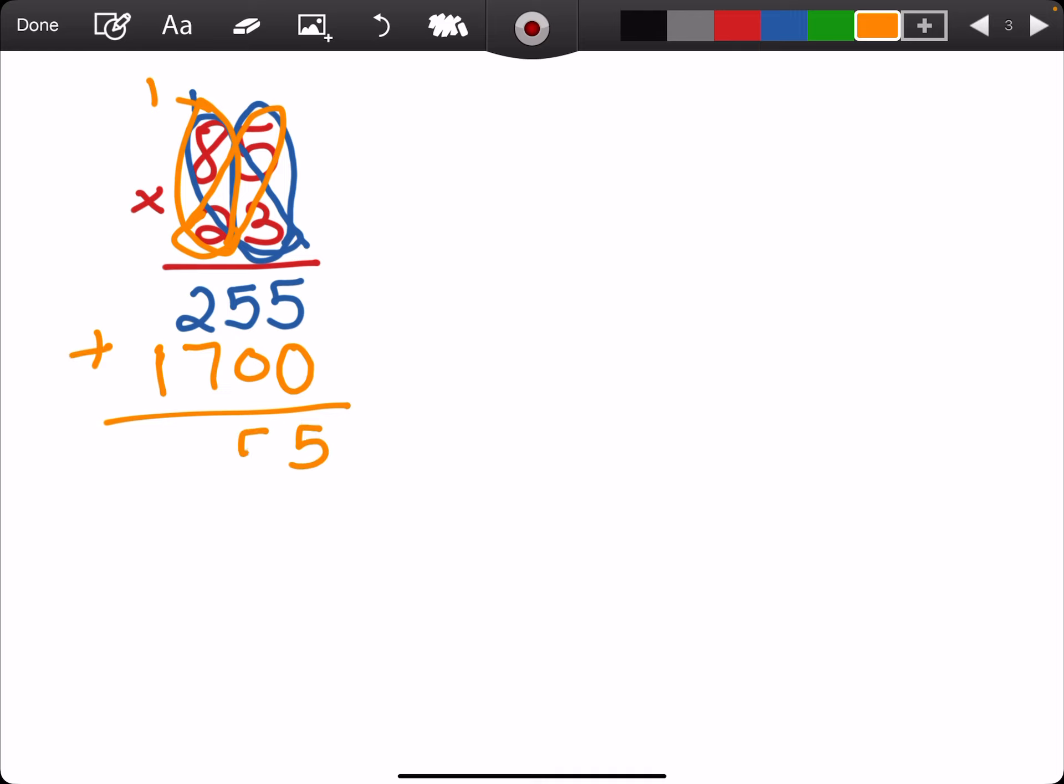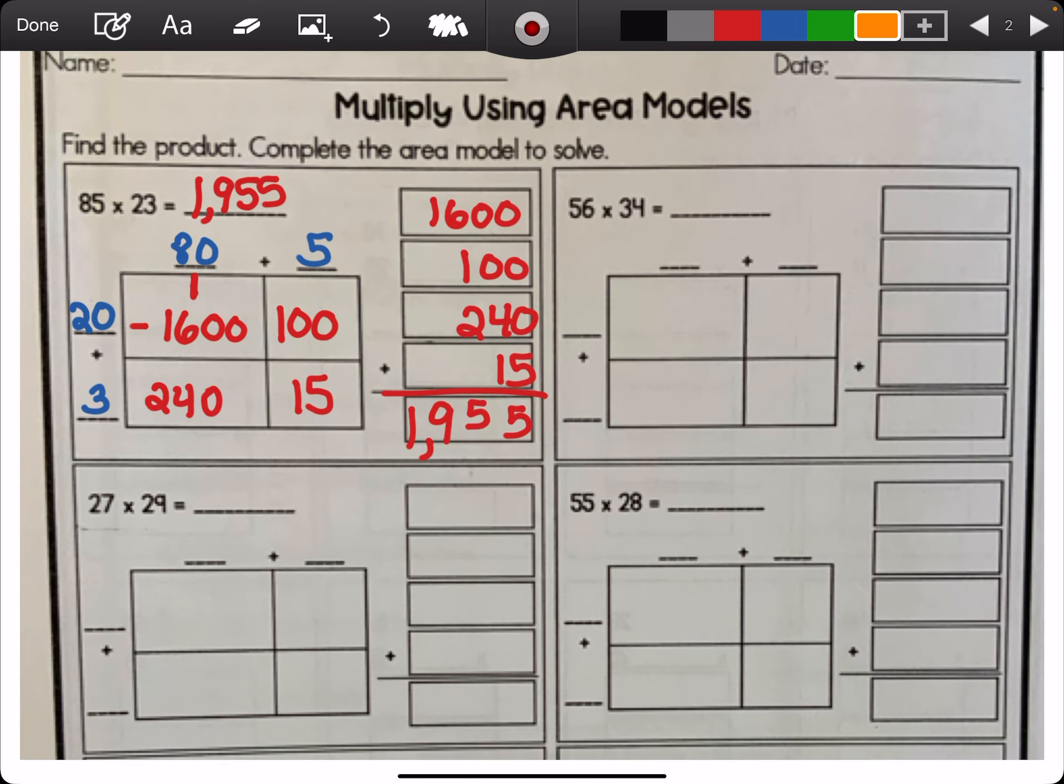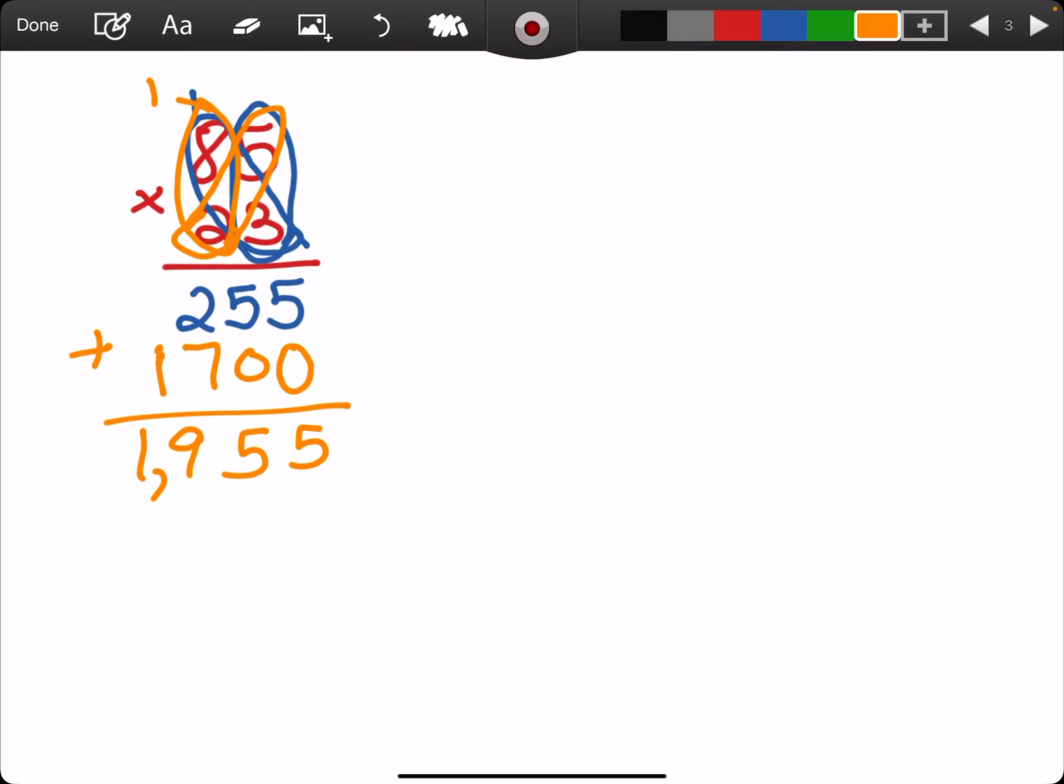2 times 5 is 10, but the 1 is 0. And then 2 times 8, I'm butterflying it, is 16, plus 1 is 17. Add it up, 5, 5, 9, 1. 1,955, which is what we have here. So right there gave you the area model to multiply a 2 digit by 2 digit, and the standard algorithm. You can choose which method you feel more comfortable with.